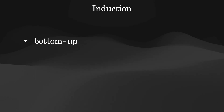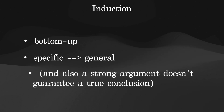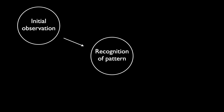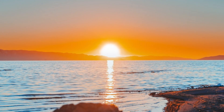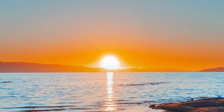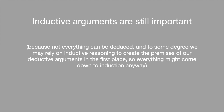Induction, on the other hand, is bottom-up reasoning. It's taking a specific observation, or string of observations, and applying those to the general case. You start with an initial observation as your first premise, then a recognition of that pattern as your next premise, and so on, followed by a general conclusion. The sun rose yesterday, and the sun rose the day before that — therefore, the sun is likely to rise tomorrow. Inductive arguments are still important, because not everything can be deduced, and we may rely on inductive reasoning to create the premises of our deductive arguments in the first place, so everything might come down to induction anyway.